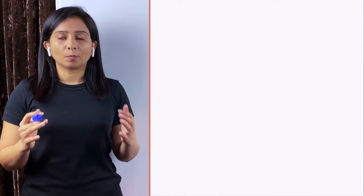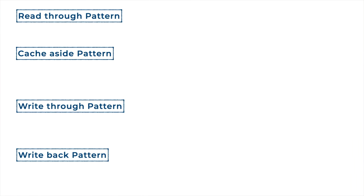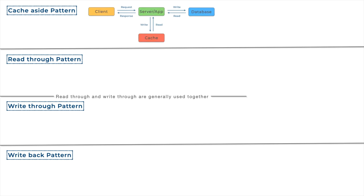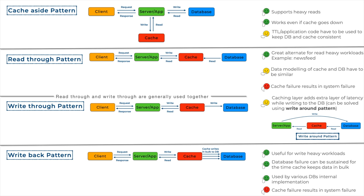That was a lot to take in — various patterns and read/write strategies. To simplify: we learned about cache-aside, read-through, write-through, and write-back. All these patterns describe where the cache is placed relative to the application and database, and who is talking to whom — it's just different placements of these three components. To decide which pattern to use, look at your requirements: heavy writes, heavy reads, or a mix. Also consider whether you can afford cache failure or DB failure. Depending on these factors, you can choose the right pattern.